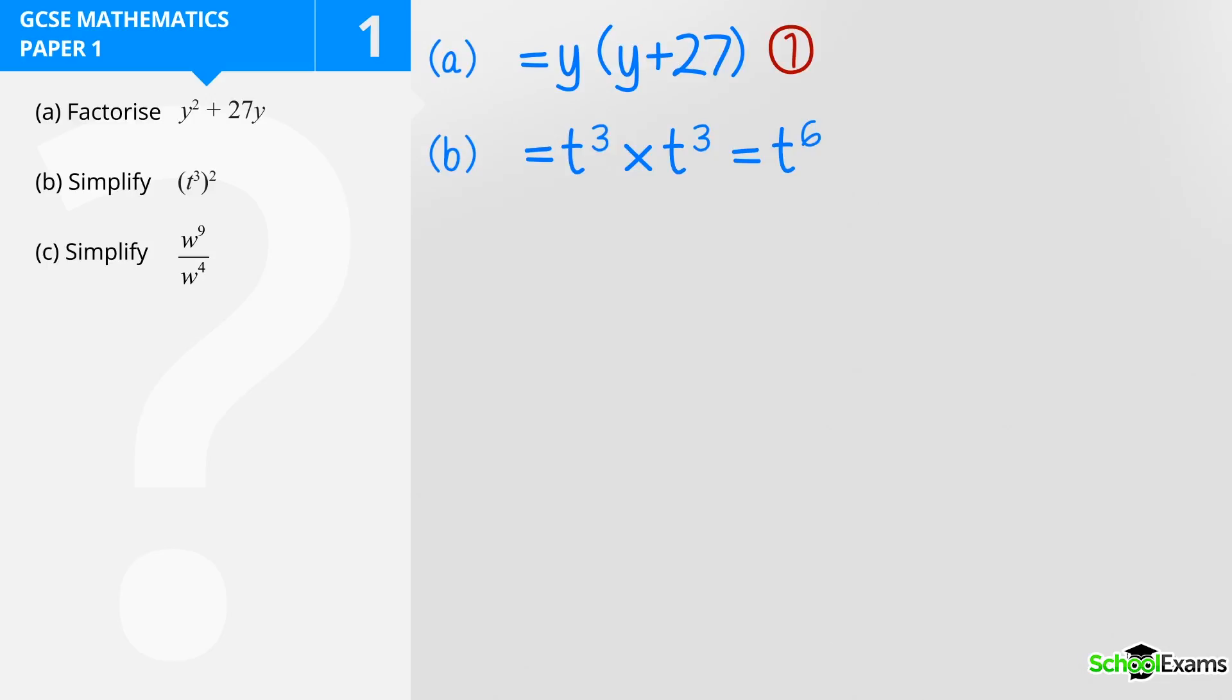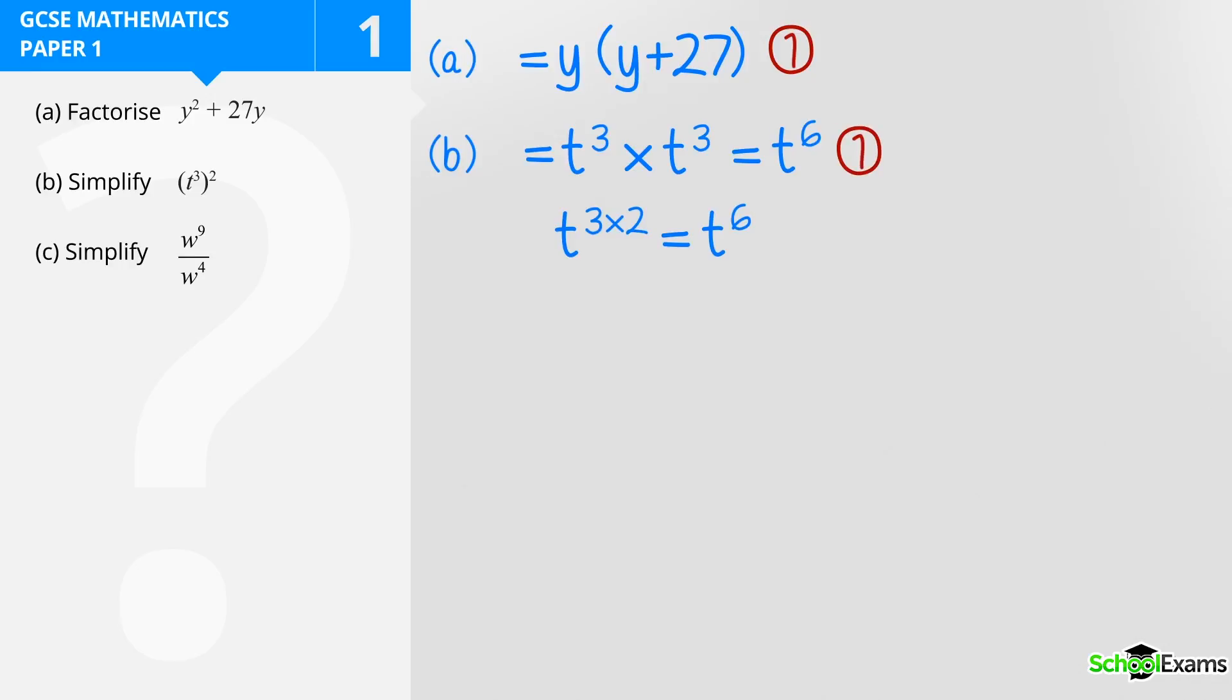The other way is t⁶. What you have to do is it's going to be t and then I'm going to do three multiplied by two which gives me t⁶. Now either method will be acceptable. One mark for either of those two methods.